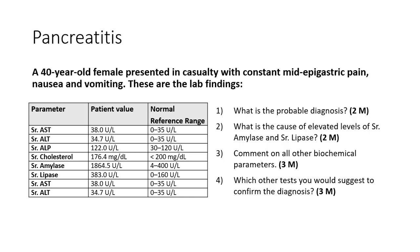Which other tests would you suggest to confirm the diagnosis? We can go for stool elastase, stool chymotrypsin, and detection of stool fat. If pancreatic lipase is absent, fat globules may be found in the patient's stool. Chymotrypsin and elastase activity will be absent in stool. Sweat chloride test can also be done, as cystic fibrosis may co-exist with pancreatic conditions.